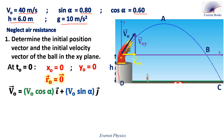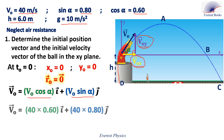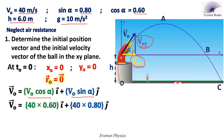Now let's determine the initial velocity of the ball. Look at the figure. V0 has two components: one along the x-axis, V0x, and one along the y-axis, V0y. So V0 equals V0x plus V0y. In the right-angled triangle, V0x is adjacent to alpha, so V0x equals cosine alpha times V0. Replacing V0 by 40, cosine alpha by 0.6, and sine alpha by 0.8, therefore V0 equals 24i plus 32j in SI units.